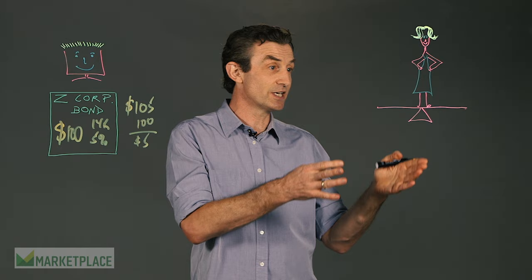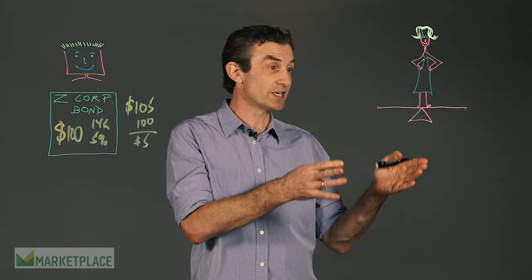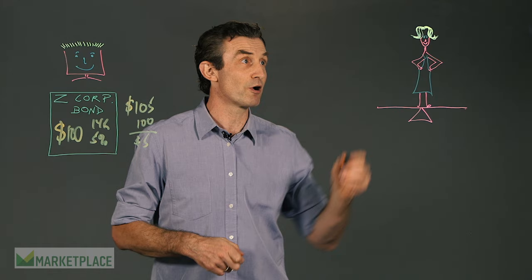So he decides to sell it to June. As you can see, June is standing on a seesaw, because a seesaw is the best way of explaining how yields work. We've got price over here, down and up in price, and we've got yield across here.